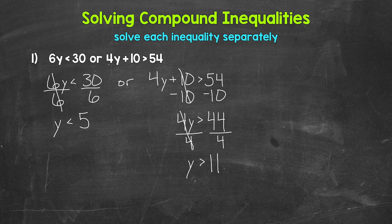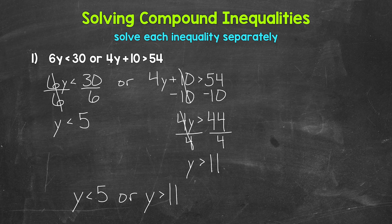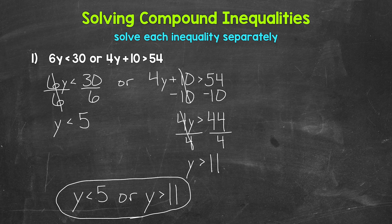Now we're done solving our two inequalities. We can rewrite this as a compound inequality involving OR: Y is less than 5 or Y is greater than 11. Remember, when it comes to compound inequalities involving OR, they are true if either inequality is true. Any number less than 5 or greater than 11 is a solution.